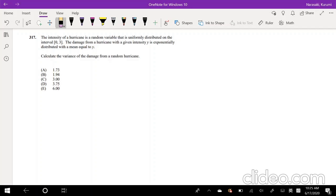It says, the intensity of a hurricane is a random variable that is uniformly distributed on the interval 0 to 3. The damage from a hurricane with a given intensity y is exponentially distributed with a mean equal to y. Calculate the variance of the damage from a random hurricane.